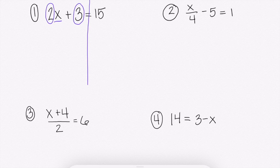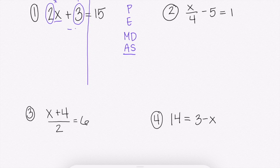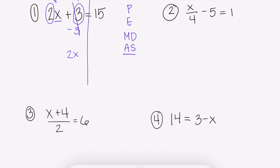We're going to go in reverse order of operations. First, we figure out what operations we have with our x. That 2 is next to x, which means we are multiplying, and then we have plus 3, so that 3 is being added on. Going in reverse order, we start with add and subtract — we have plus 3. To get rid of plus 3, we subtract 3, because 3 minus 3 gives us 2x plus 0, which is just 2x. Whatever you do to one side of the equation, you have to do to the other. So 15 minus 3 gives us 12.